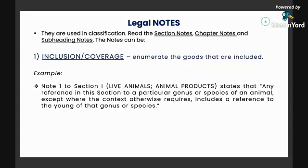Here's an example from the section notes for live animals, which states that any reference in this section to a particular genus or species of an animal, except where the context otherwise requires, includes a reference to the young of that genus or species. For example, if the horse is classifiable under 0101, then the baby horse is also classifiable under 0101. Similarly, wherever the HS code for dogs is found, puppies are also classifiable under that same code.